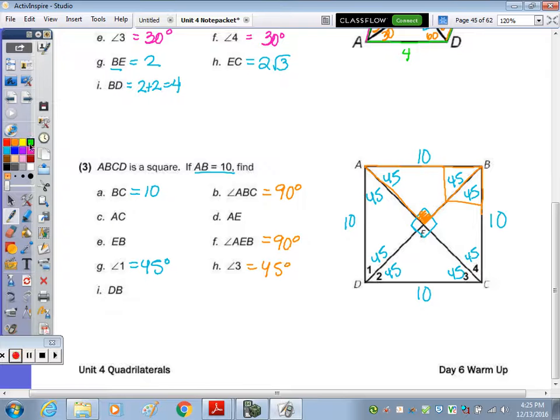Now to focus on the segments, AC is this diagonal. Well, if I look at this big 45, 45, 90, if each side is 10, we know in the 45, 45, 90 it goes X, X, X radical two. So AC is going to be 10 radical two.